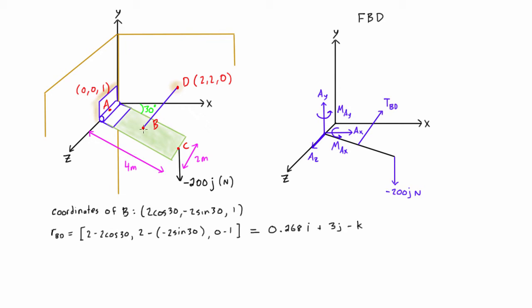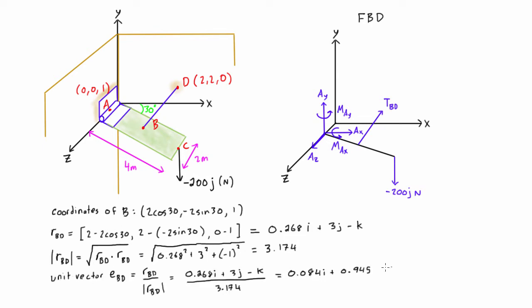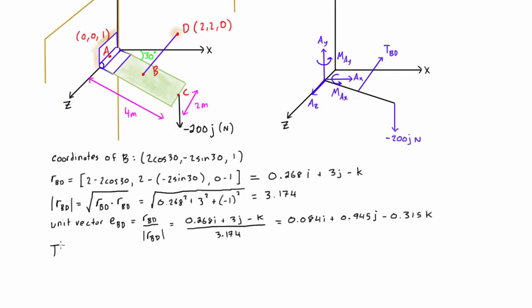Now we have the position vector from B to D in vector form. The next thing we need to get is its length. To calculate the length of rBD, we just have the square root of this vector dot itself. The next thing we have to do is find the unit vector of the tension, eBD. To do that, we divide the position vector rBD by the magnitude of the position vector. Now that we know the unit vector, tension in vector form is just the unit vector times the magnitude of the tension.